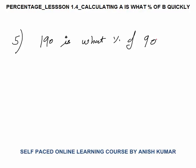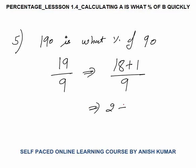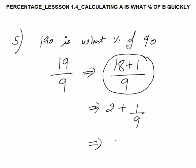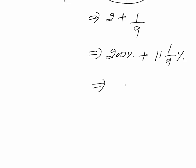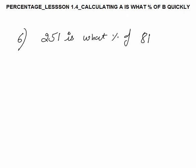For question 5, the fraction is 19 by 9. To calculate faster, write this as 18 plus 1 by 9, which is 2 plus 1 by 9. No need to write this in the exam — solve in your brain. 2 is 200 percent, and 1 by 9 is 11⅑ percent, so our answer is 211⅑ percent.